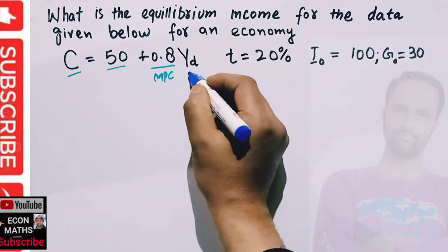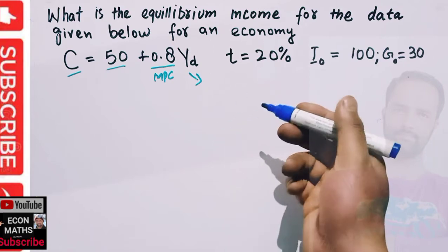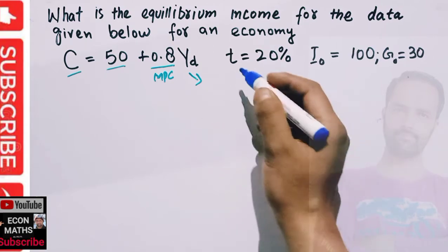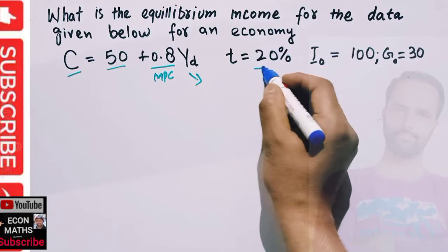Y_d is our disposable income - the income left after taxes are paid. t = 20% is our marginal tax rate (MTR).